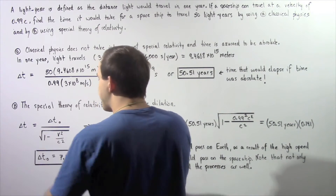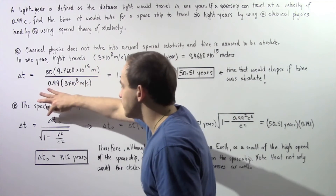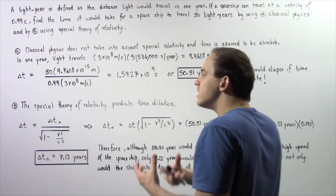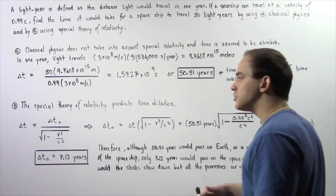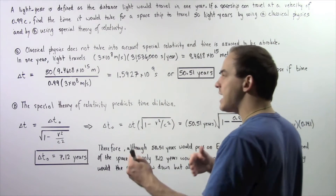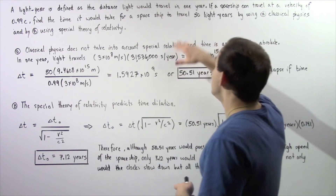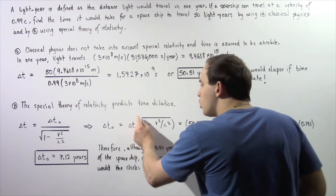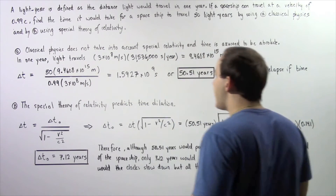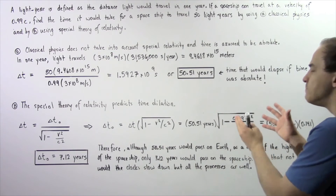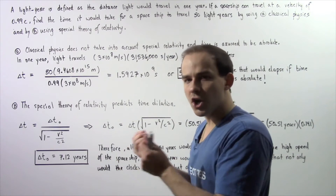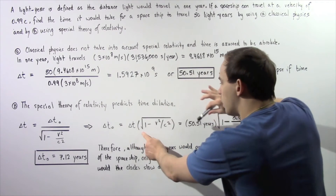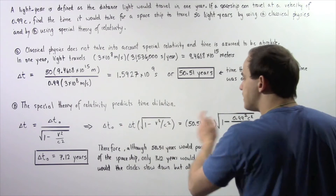We rearrange the equation and solve for ΔT₀, which tells us the time that would elapse inside the spaceship — how long it would actually take the spaceship to travel 50 light years. We use ΔT from Part A as the time people experience on Earth, giving: ΔT₀ = ΔT × √(1 − v²/c²).